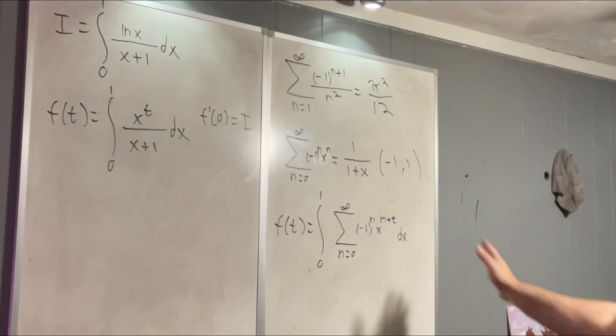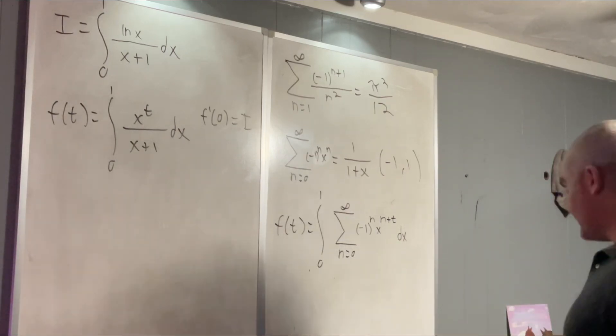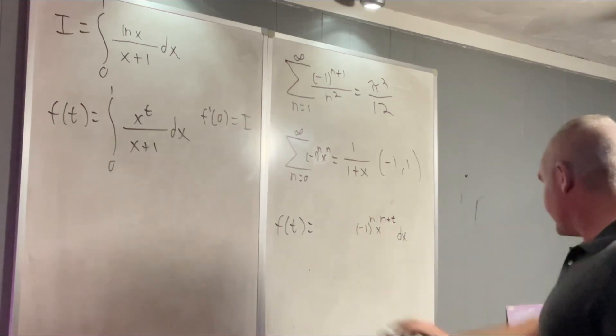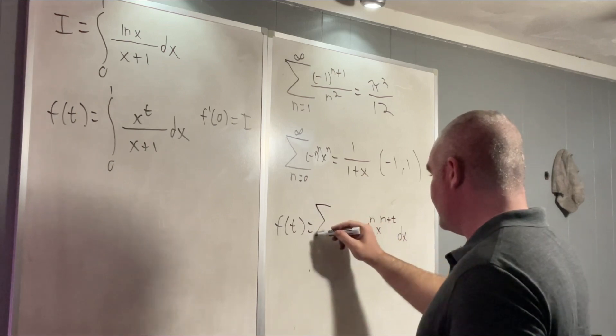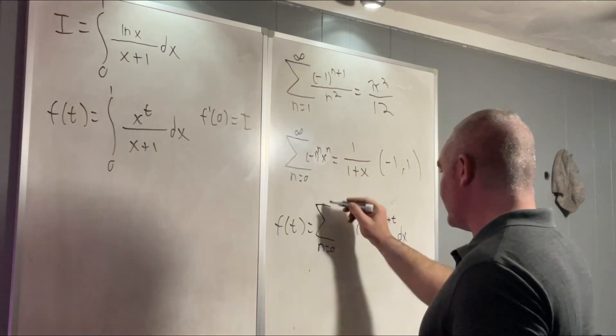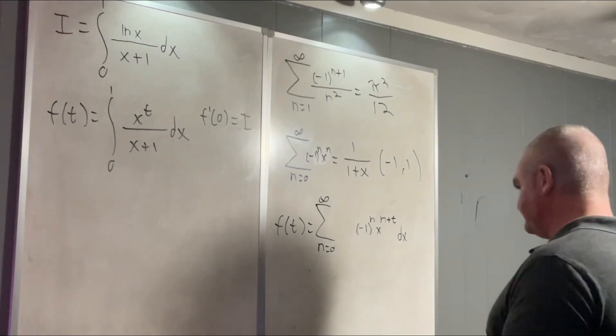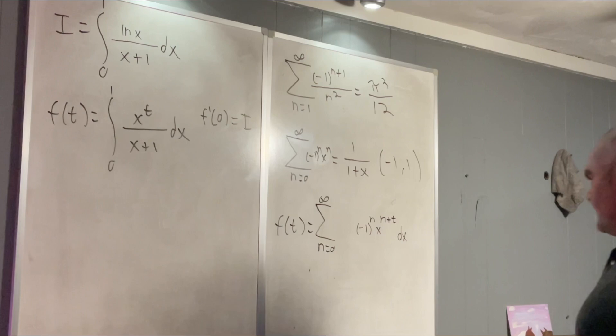Now, we're going to use Fubini's theorem to switch the integral and summation signs. So we're still going to have the sum from n equals 0 to infinity. Except now we're going to be taking the integral of this thing.